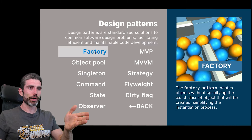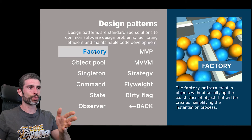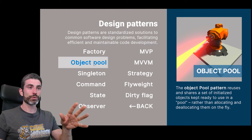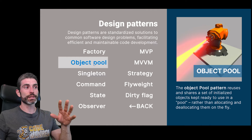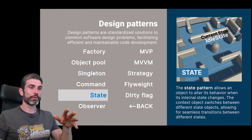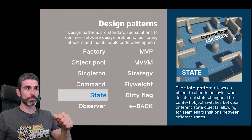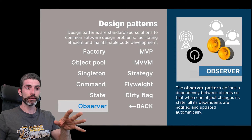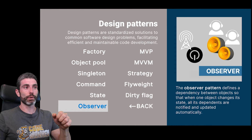Then you still have the factory pattern, which handles creating objects; object pooling, which helps you initialize objects and reuse them; the state pattern, which is essentially a state machine; and the observer pattern, which is essentially all about events.